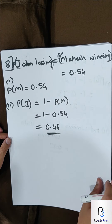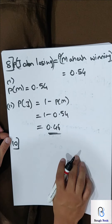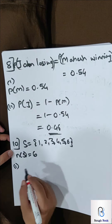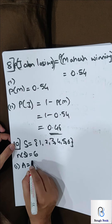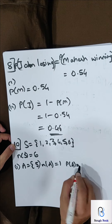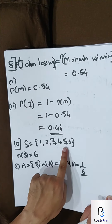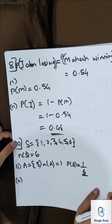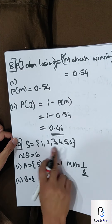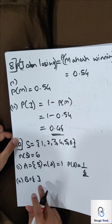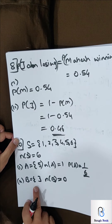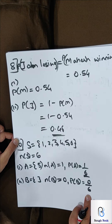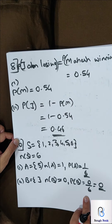Sum number 10: In a single throw of a die, possibilities are 1, 2, 3, 4, 5, and 6 — number of S = 6. First event: getting a 5. Number of A = 1, probability of A = 1 by 6. Second event: getting an 8. Is there an 8 on a die? No, 8 is not there. Number of B = 0, so probability of B = 0 by 6. You are expected to write it as simply 0, with no denominator.